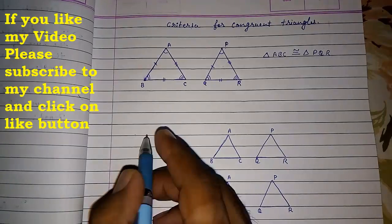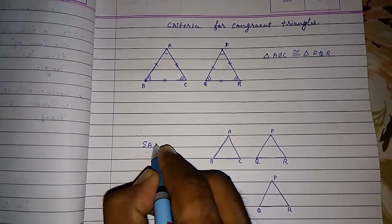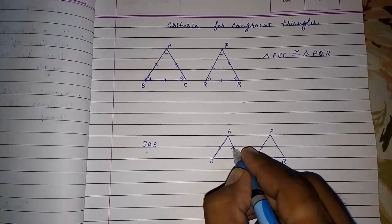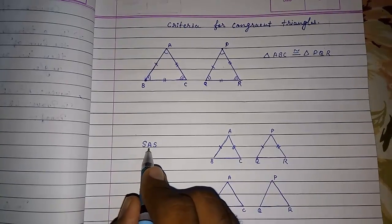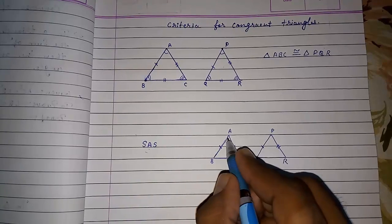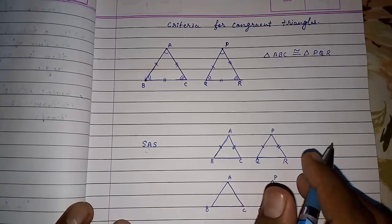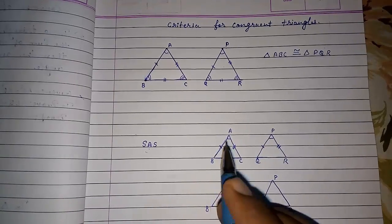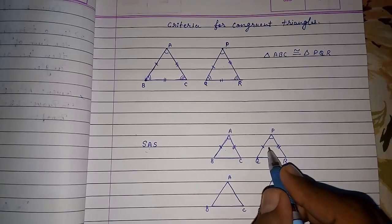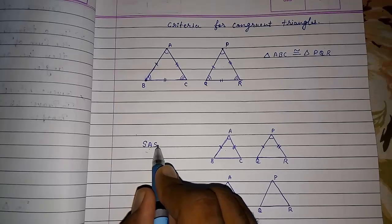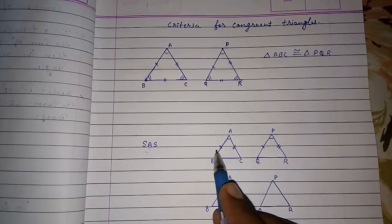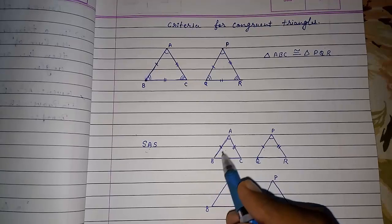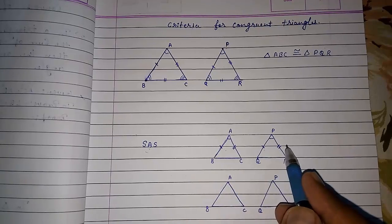The first rule is Side-Angle-Side (SAS). If in two triangles two sides are equal — look here, this side equals this and this side equals this — and the angle between those two sides is also equal, then we can directly say triangle ABC is congruent to triangle PQR by the Side-Angle-Side rule. Note: it must be the angle between the two sides, not any other angle.